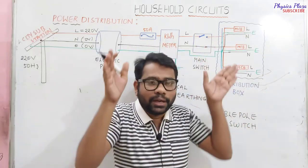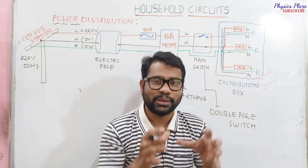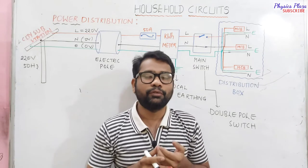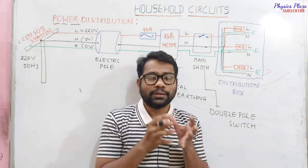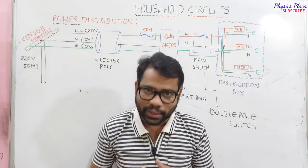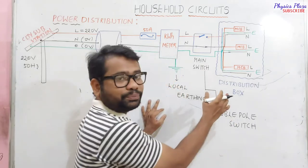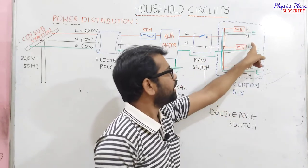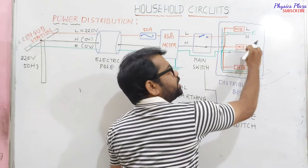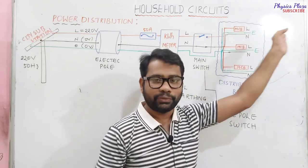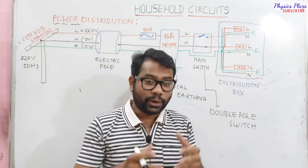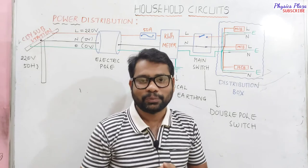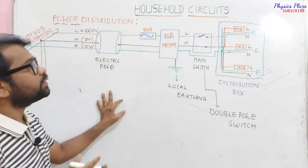From the main switch, connection goes to the distribution box in our houses, which contains MCBs — miniature circuit breakers — which have replaced fuses. From the distribution box, live wire, earth wire, and neutral wire can be taken as connections to refrigerators, fans, bulbs, and other appliances as needed.